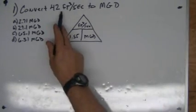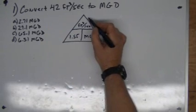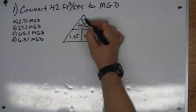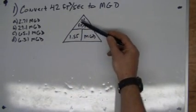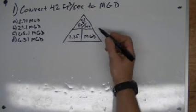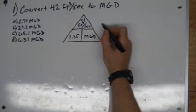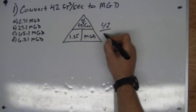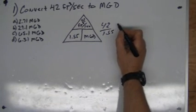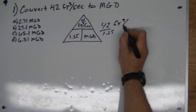So we take 42 cubic feet per second, put it on this part of the triangle, and since that's on top, it's 42 divided by 1.55. That's going to be cubic feet per second.